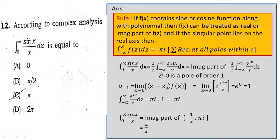The integral from 0 to ∞ of sin(x)/x dx can be written as half of the integral from −∞ to ∞ of sin(x)/x dx, which is the imaginary part of half times the integral from −∞ to ∞ of e^(iz)/z dz. Since the denominator has z, z=0 is a pole of order 1. The residue is the limit as z→0 of z · e^(iz)/z, which simplifies to e^0 equals 1.